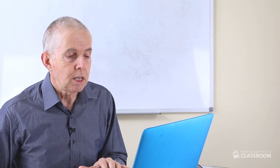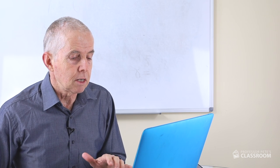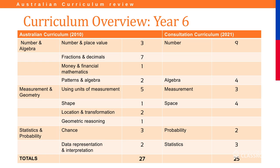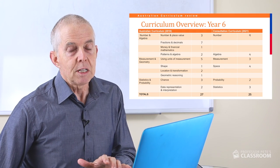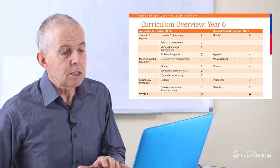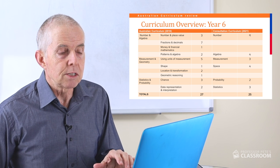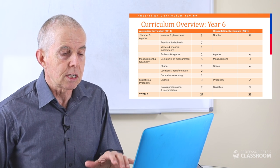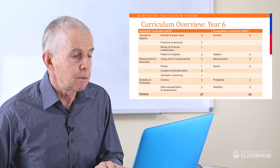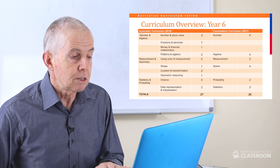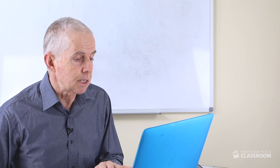Looking at an overview of the year six curriculum, we can see the previous version of the curriculum. The current curriculum had 27 content descriptors; the new one has 25. They've been rearranged a little. The sub-strands have disappeared, so we just have the six main strands in the new proposed curriculum.